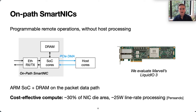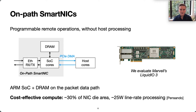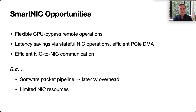SmartNICs are another option for hardware acceleration. On-path SmartNICs place ARM cores and DRAM on the packet data path, creating the potential for flexible remote operations without the overhead of host RPCs. SmartNICs are also cost-effective. The ARM cores and memory controller come at a modest increase in die area and with low power consumption even when manipulating line-rate traffic. For this project, we use Marvell's LiquidIO3 SmartNIC, and we provide a discussion of some other NICs as well.